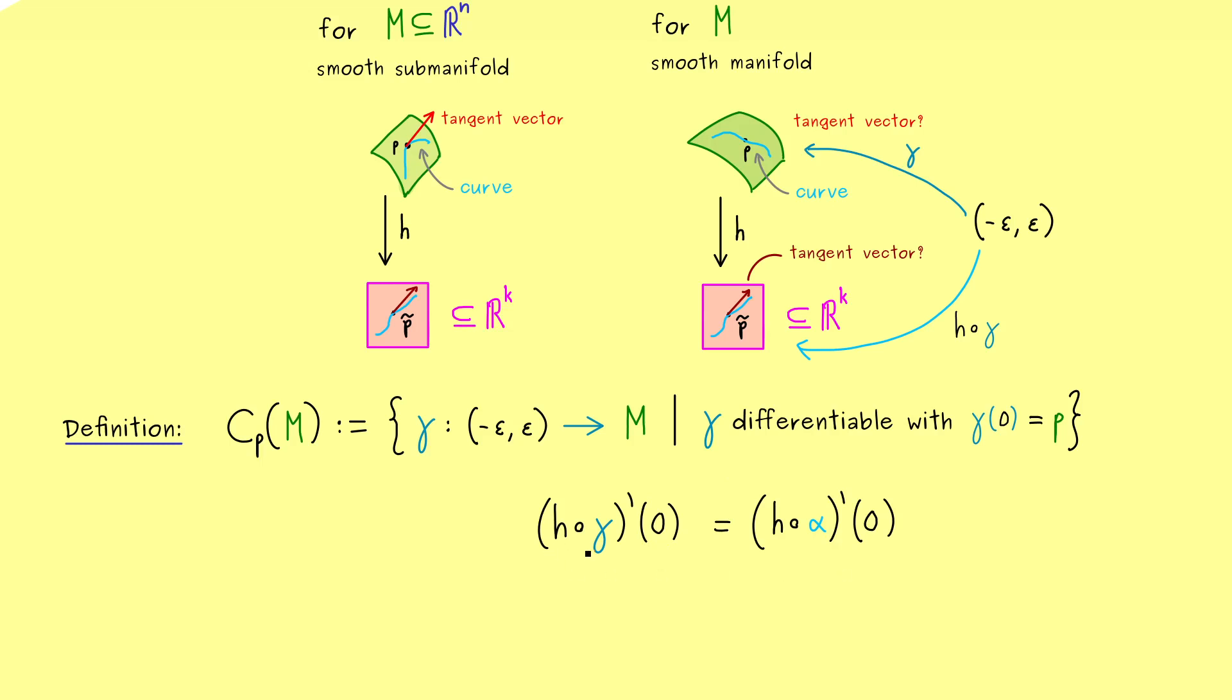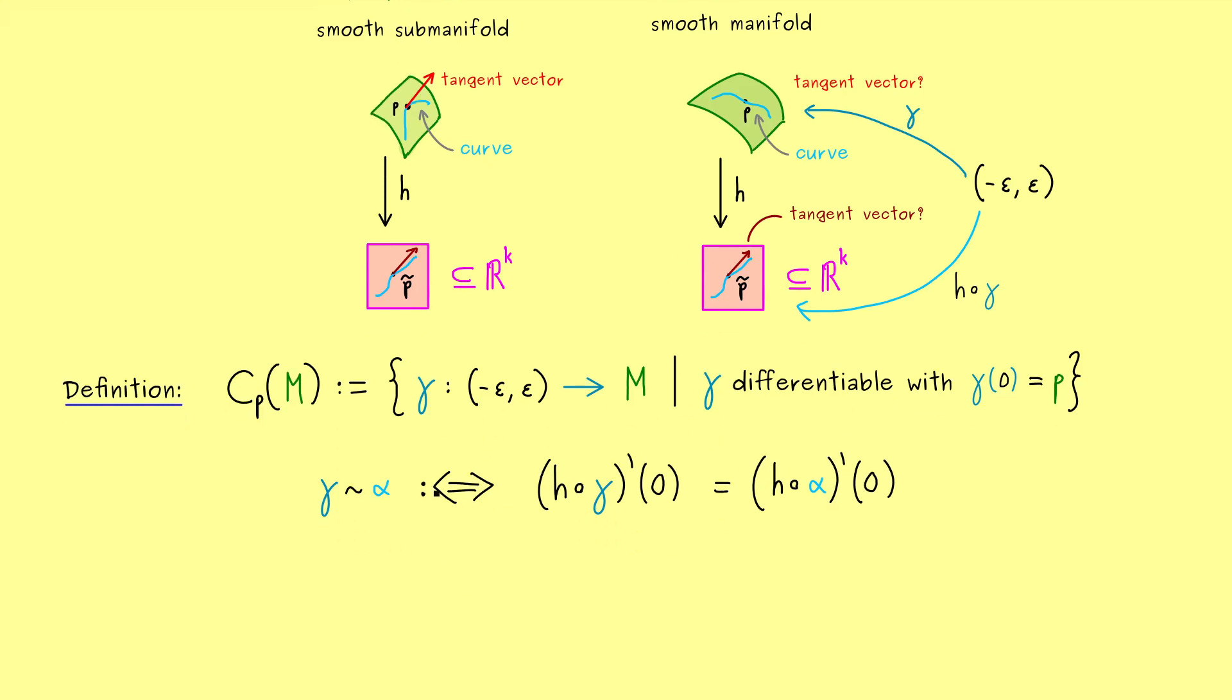And of course, we have the same on the lower level. So just imagine, we take another curve alpha here, which has the same tangent vector on the lower level. Therefore, if we are just interested in the end result, both curves are exactly the same for us. We don't have to distinguish between both curves, because in the end they give us the same tangent vector anyway.